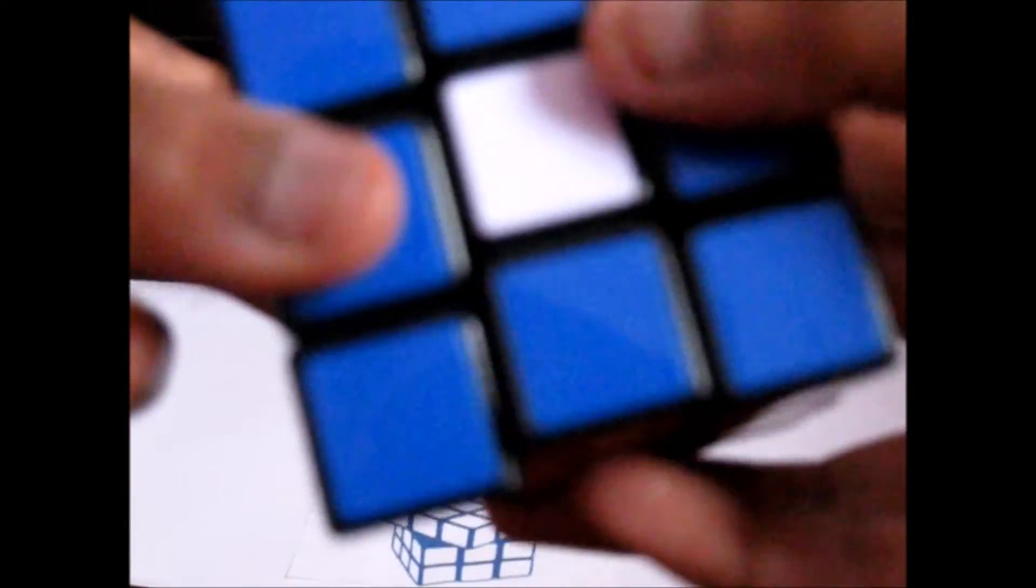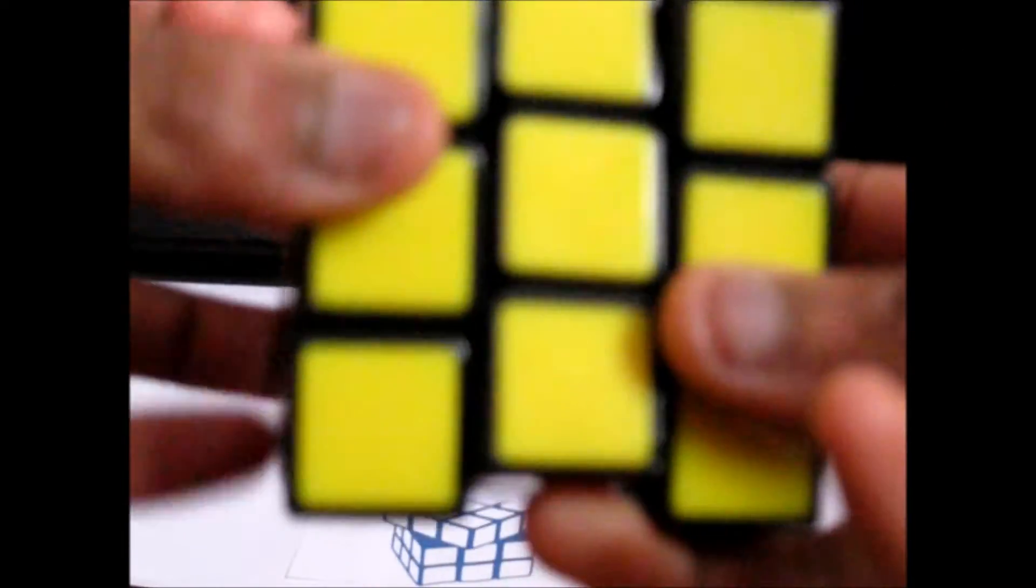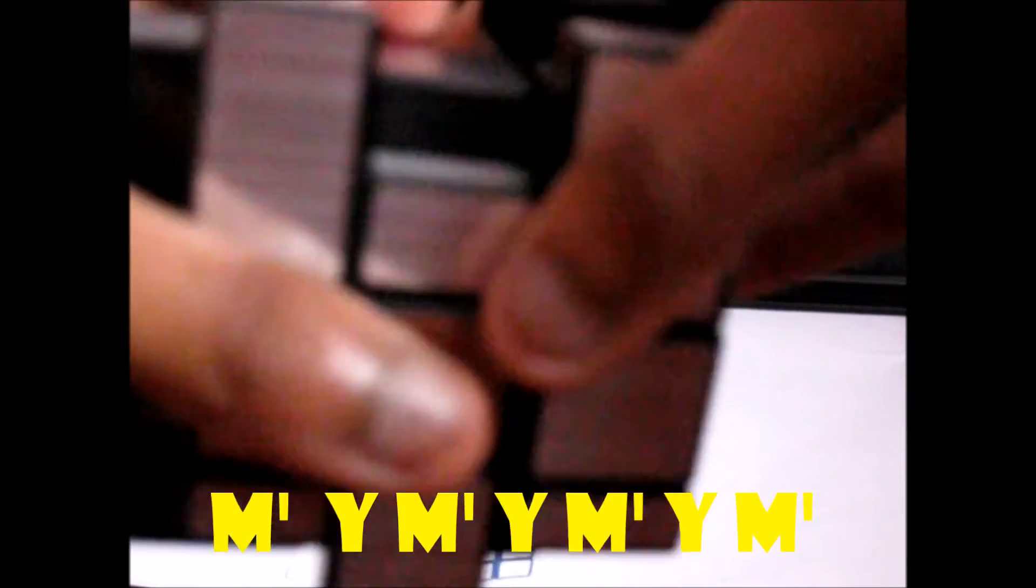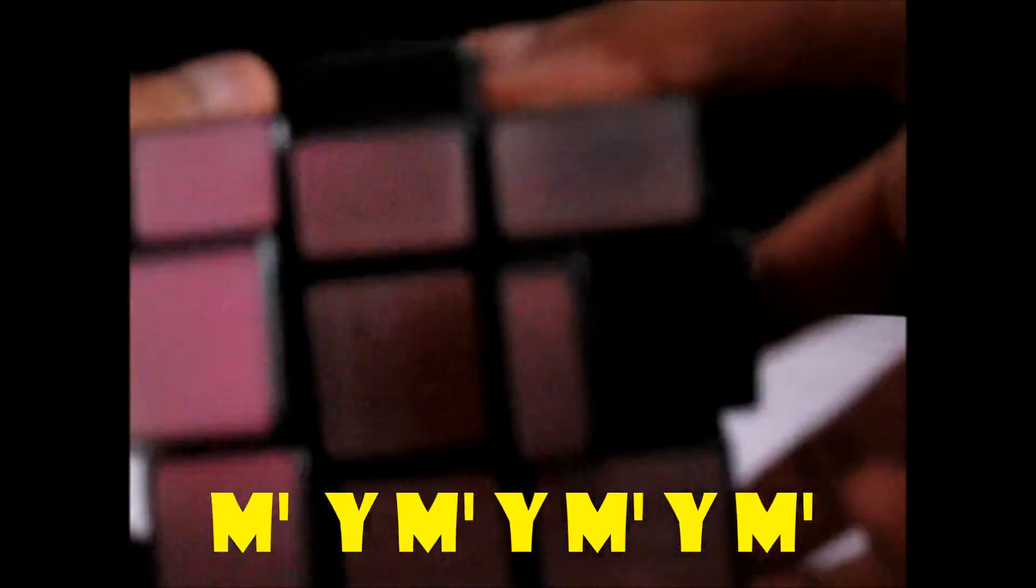And then I just reverse the algorithm to get the cube back in its normal state. So on this you do the same thing. Just do that and that. And see the centers have switched. And you do the same thing to bring it back.